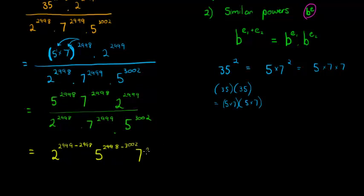7 is 2998, minus what is in the denominator, which is 2999. Okay, so in the end, what do I have?